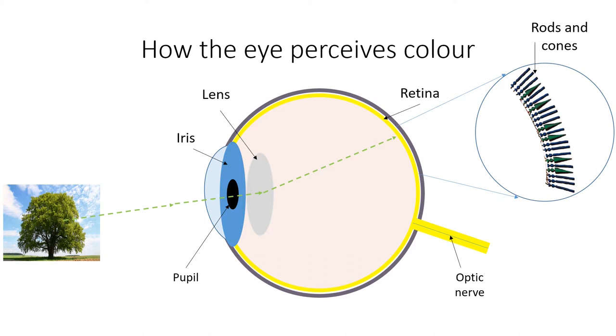The cones fall into one of three categories. One kind is sensitive to red light, another green and another blue. Finally, the optic nerve carries signals to the brain.